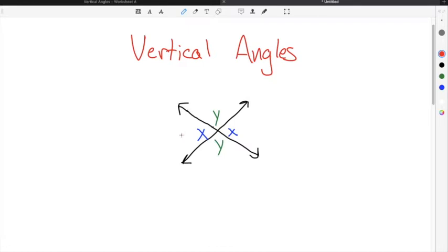When solving for vertical angles, the angles that are vertical are congruent. That means that they are equal. So in the case of this example, if this angle right here was 45 degrees, that means that this angle, because it's the vertical angle, also has to be 45 degrees because it's equal.